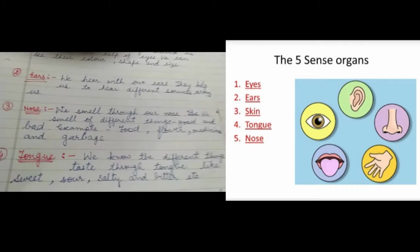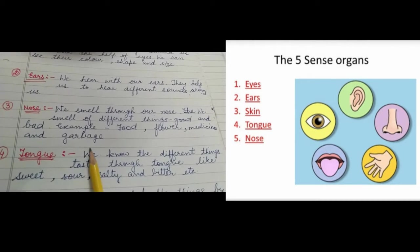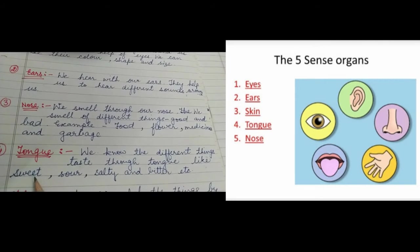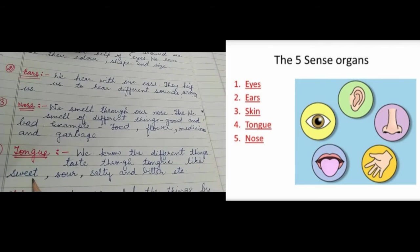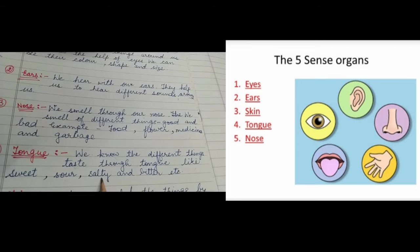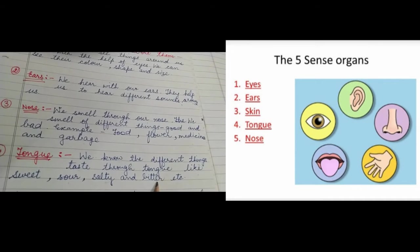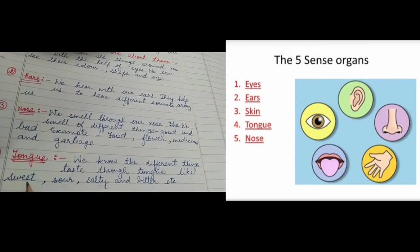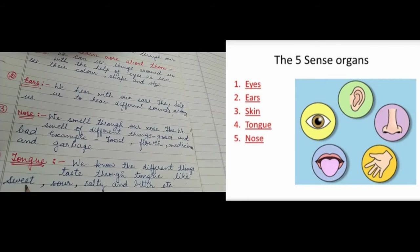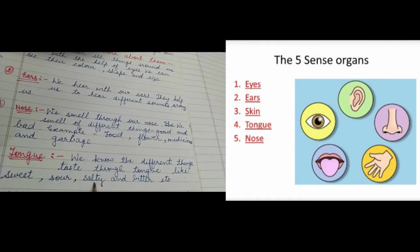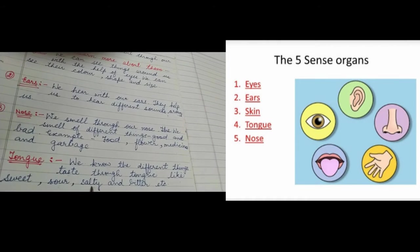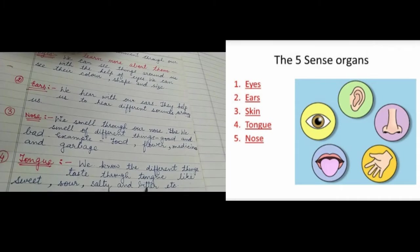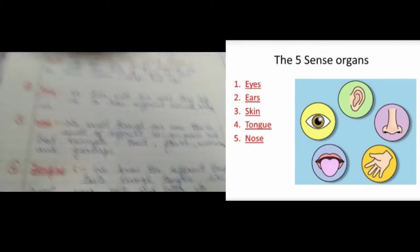Next is tongue. We taste different things through our tongue. The tastes include sweet, sour, salty, and bitter. For example, a toffee tastes sweet, lemon tastes sour, chips are salty, and medicine is bitter in taste.